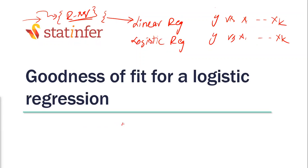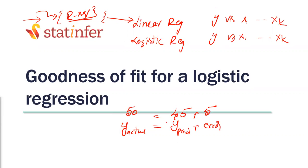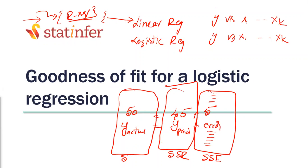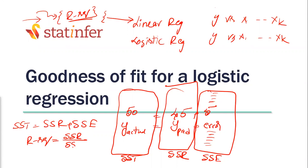To quickly recap the R-squared derivation: you have a y predicted value and an error when making predictions. If y actual is 50 and you predicted 45, the error is 5. This error occurs at every point, so we take the sum of squares of errors. Similarly, we take the sum of squares of regression predictions. Sum of squares of total equals sum of squares of regression plus sum of squares of errors. R-squared equals SSR divided by SST.